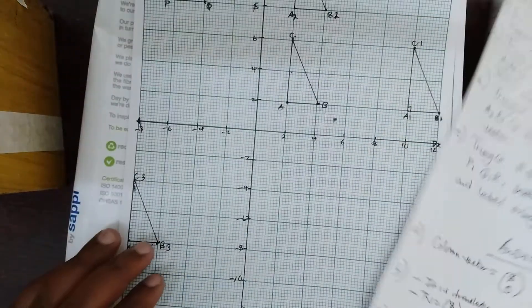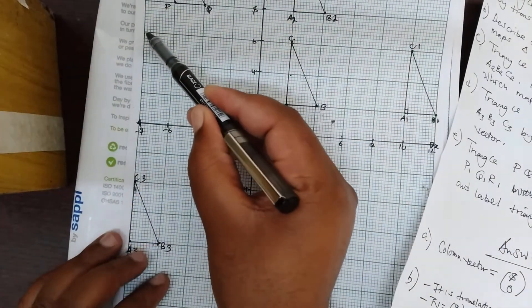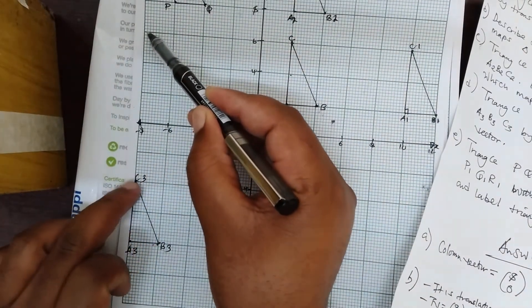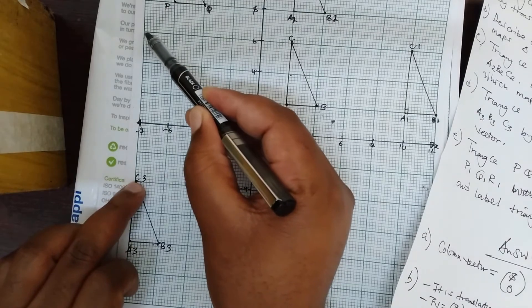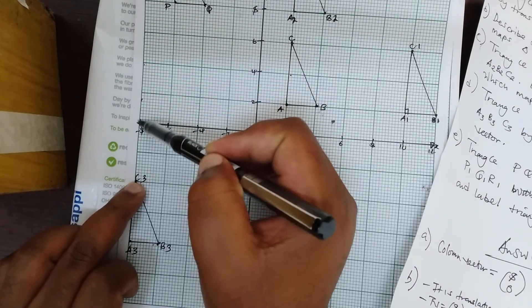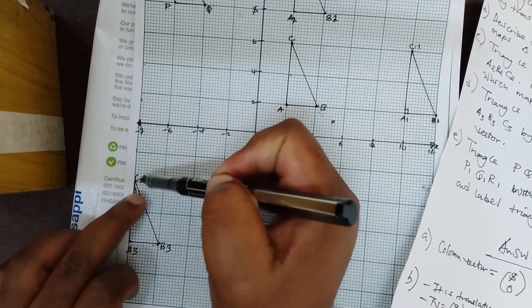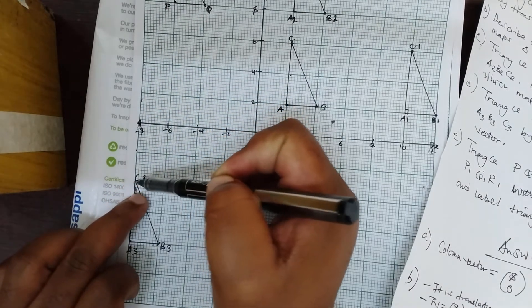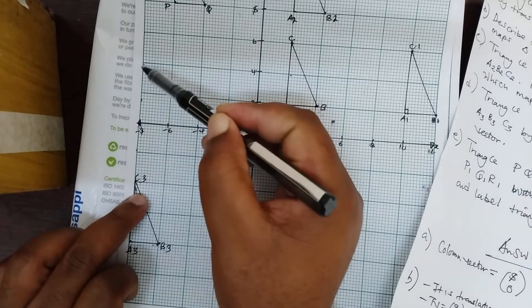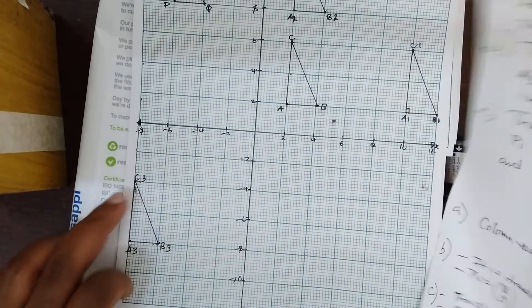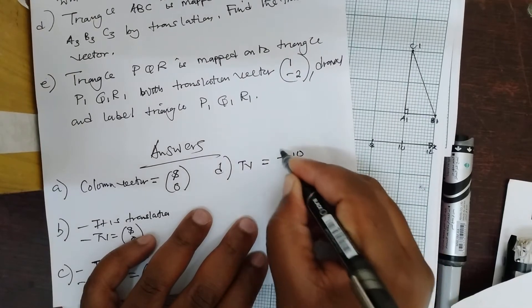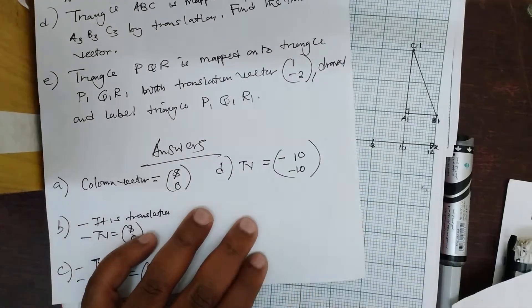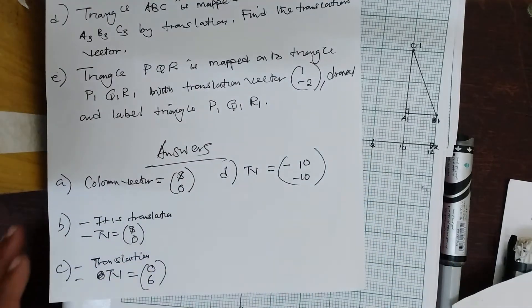Now you have to move from this point until you meet the image. You are going to say 2, 4, 6, 8, 10 again — so it's 10. But because you are going downwards, it will be negative 10. That is the answer.